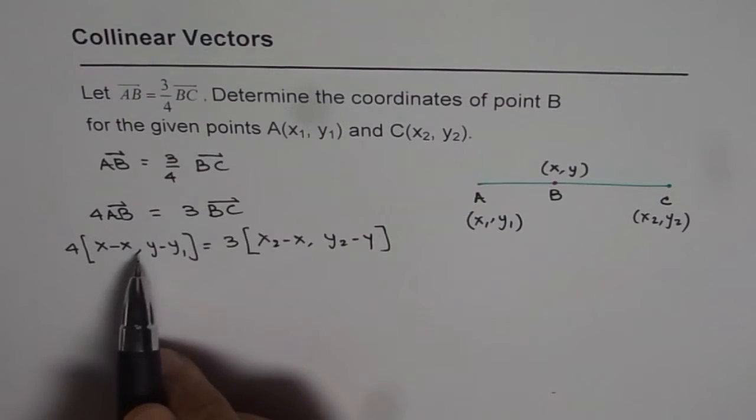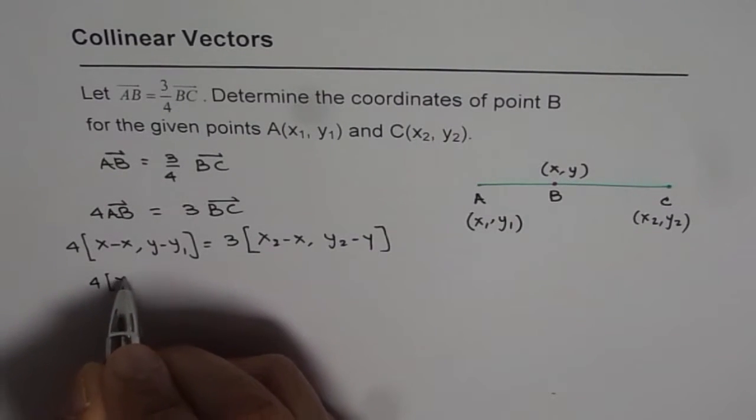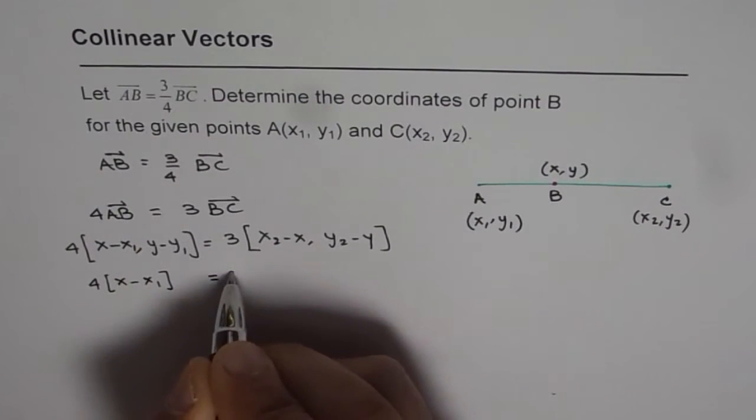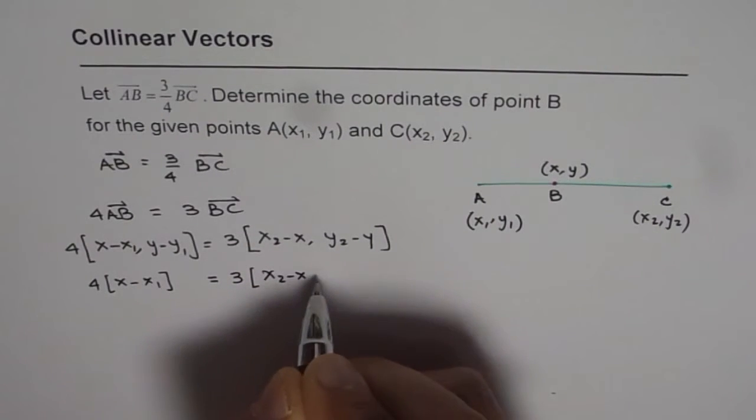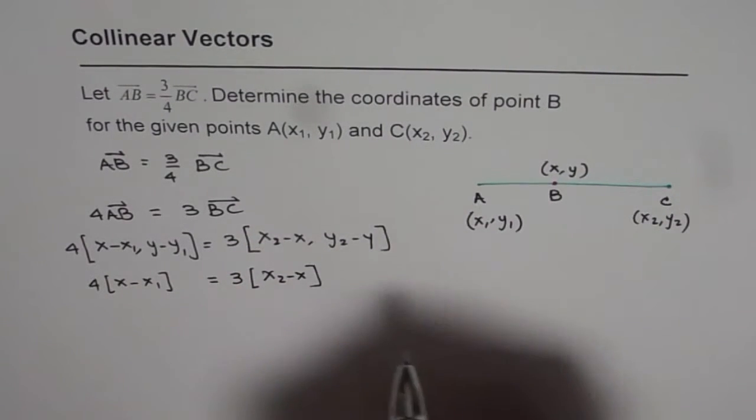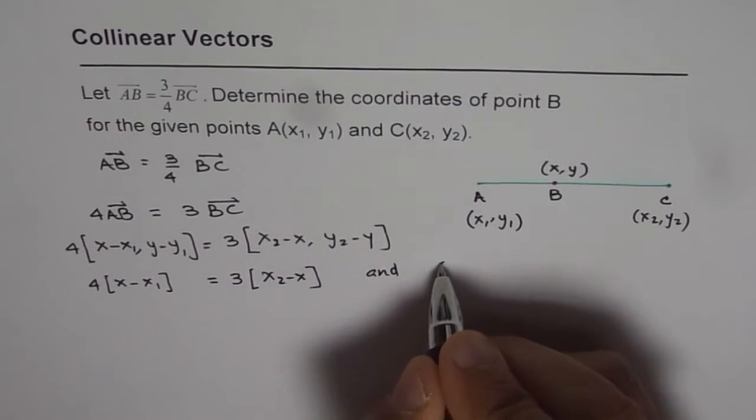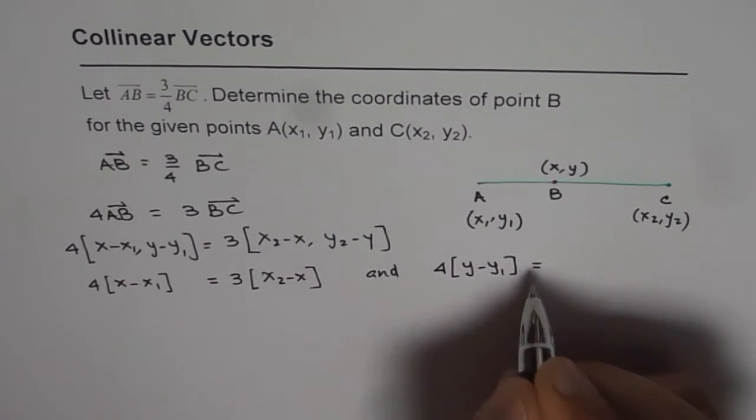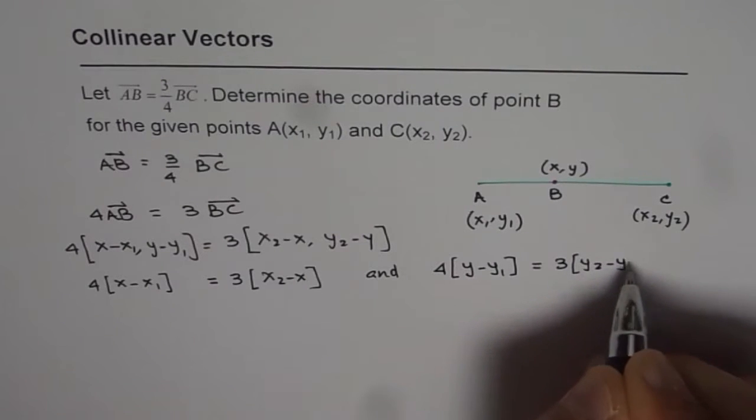If these two things are equal, then 4 times (x minus x₁) should equal 3 times (x₂ minus x). And 4 times (y minus y₁) should equal 3 times (y₂ minus y).